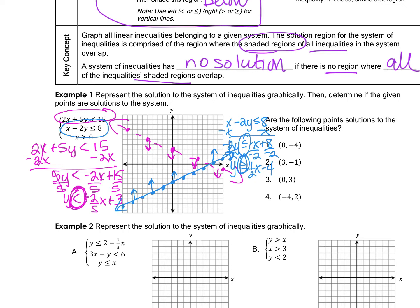The third inequality is x > 0, which crosses the x-axis at 0. Since there's no y, there's no slope — it's a straight vertical line. It just says greater than without equal, so it's dotted. Since x is greater than, you shade to the right. The pink is shaded below, blue above, and purple to the right, so the triple-shaded area is this section here.